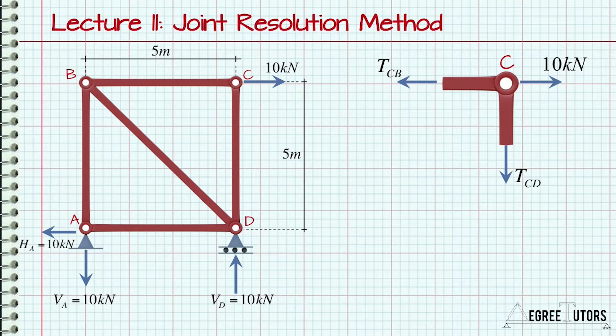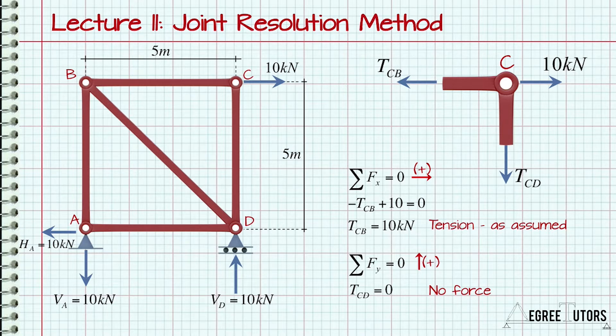Now, we know our structure is in a state of static equilibrium and therefore so too is the joint. So the sum of vertical and horizontal forces acting on the joint must be zero. So constructing our equilibrium equations in the usual way yields TCB equal to 10kN's tension, as we assumed, and TCD equals zero. There are no vertical forces acting on the joint, which means TCD must be zero for all vertical forces to be balanced.